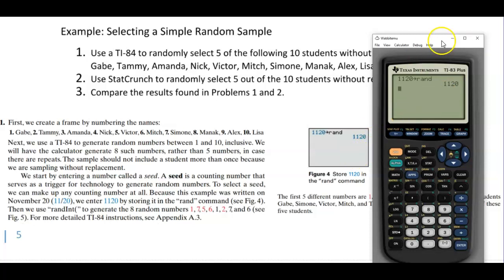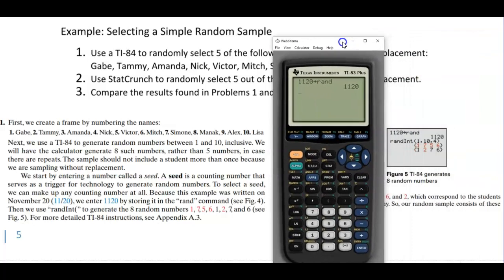Then we're going to use the randInt to generate eight numbers. In order to do that we need to go to math, select probability, and then scroll down all the way to randInt. Now the first two numbers that we need to put in here are the range of numbers that's in the list. So we start with one and we're going all the way to ten. So that tells us that all ten students have been included.